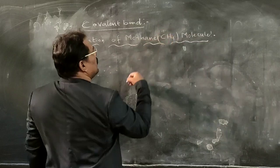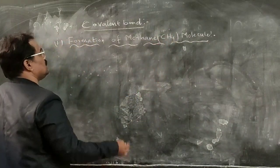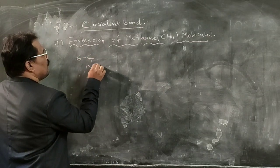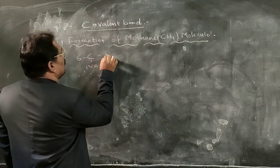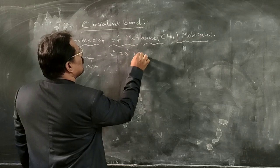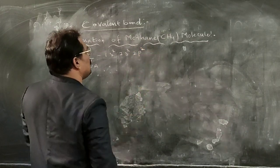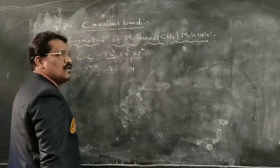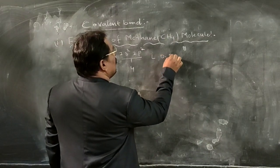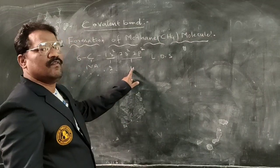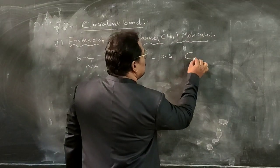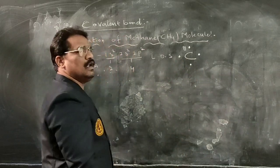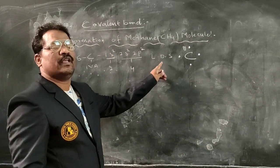To form the methane molecule, we have carbon as one element and hydrogen as another. For carbon, whose atomic number is 6, which belongs to the 4th A group elements, the electronic configuration is 1s2, 2s2, 2p2. Its first shell has 2 electrons and the second shell has 4 electrons. The Lewis dot structure of carbon shows 4 electrons represented around the symbol C.